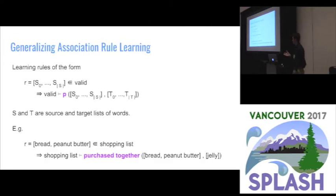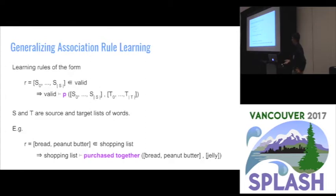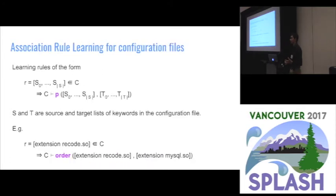We're going to generalize this a little bit, because in configuration files we're not only interested in associations — that some keywords appear in the same files — but some general predicate p. Generalizing the previous example, we'll use a predicate called 'purchase together', which says that bread and peanut butter are in your shopping list. Then given the context of my shopping list, I should be able to derive that the predicate 'purchase together' is true over these keywords. This naturally extends to our configuration file example: if I have the extension recode in my configuration file, then I need to enforce that the ordering is recode before MySQL.